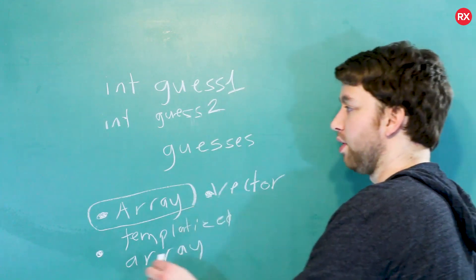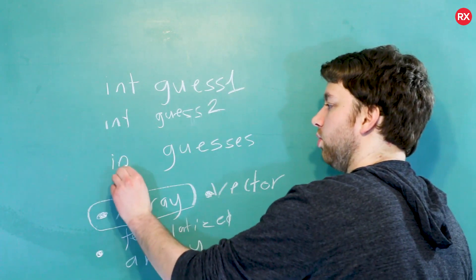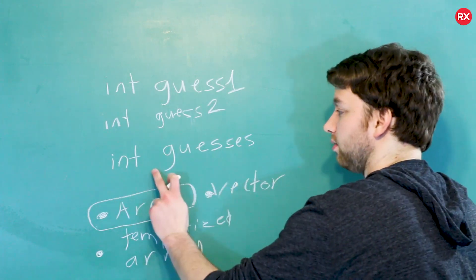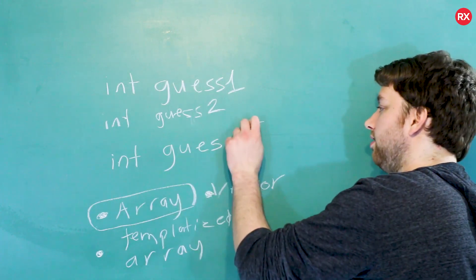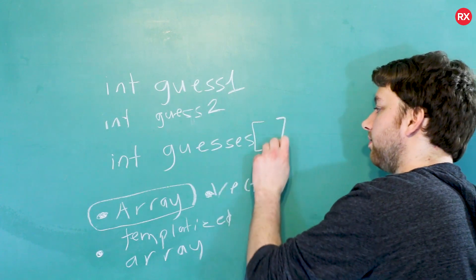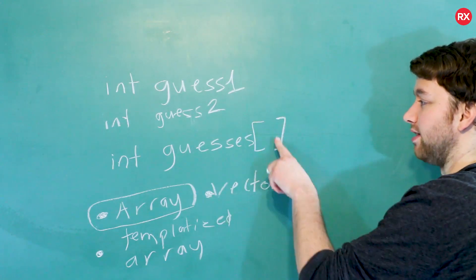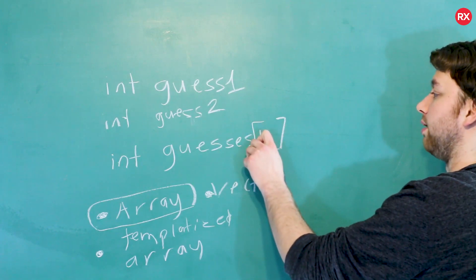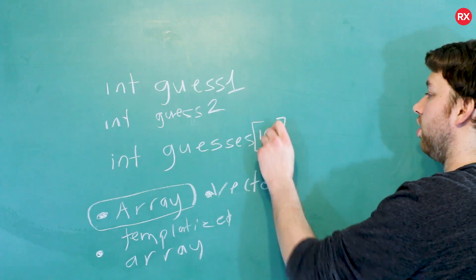So if we wanted to create an array, it would look like this. We're going to store ints, integers, and the variable is going to be called guesses, but we're going to end it with square brackets. And then what we can do is we can put a size for this inside of here. So we could say hey, we want to be able to store a hundred guesses.